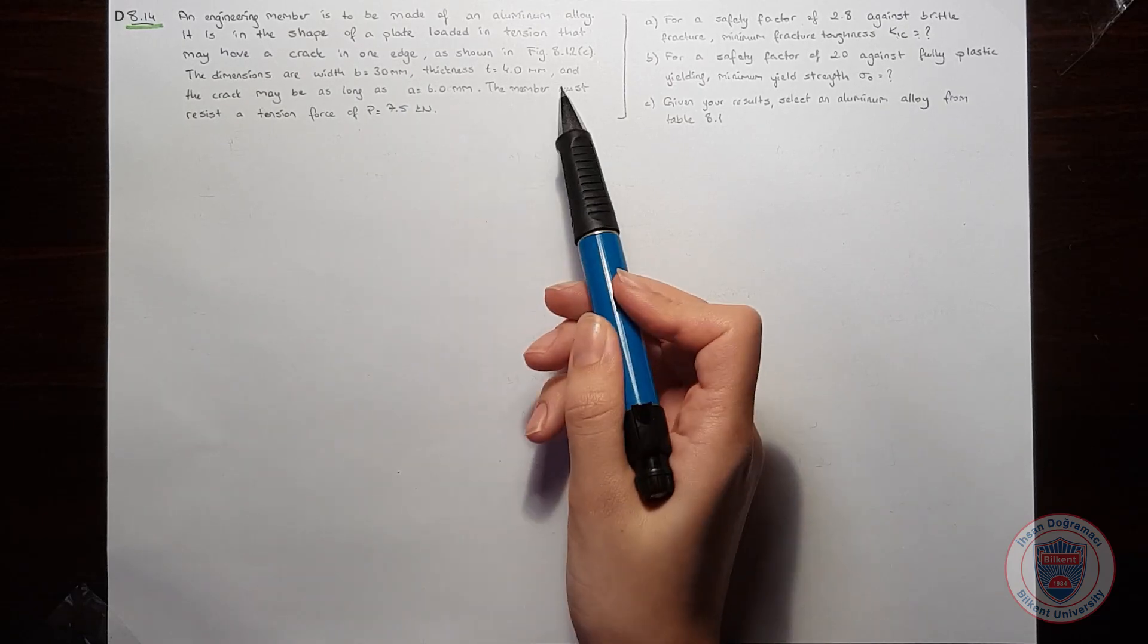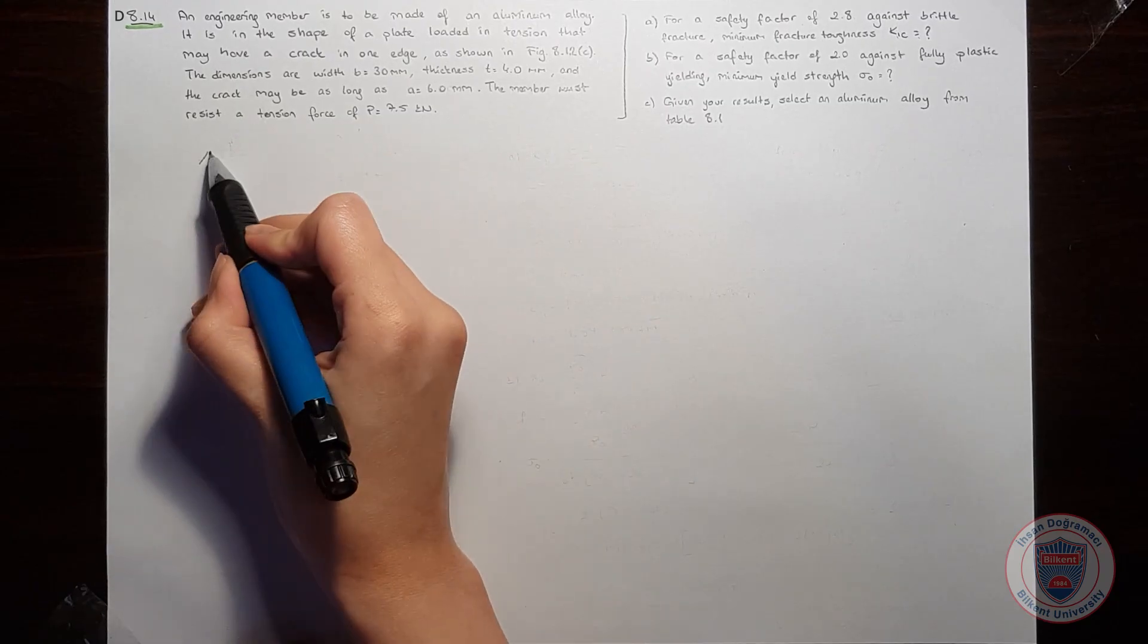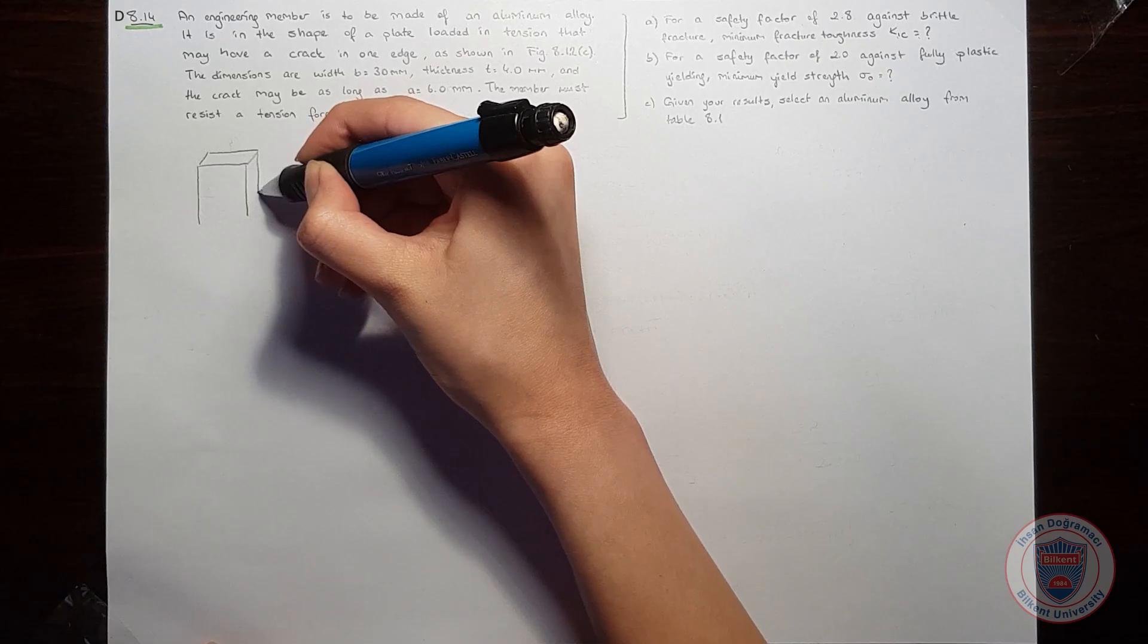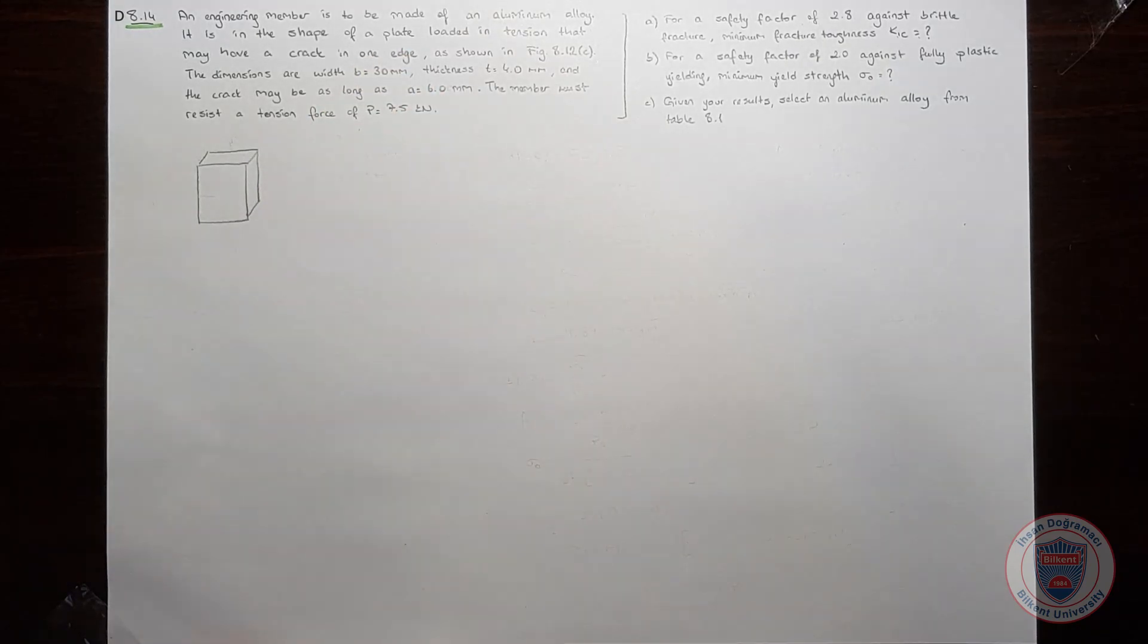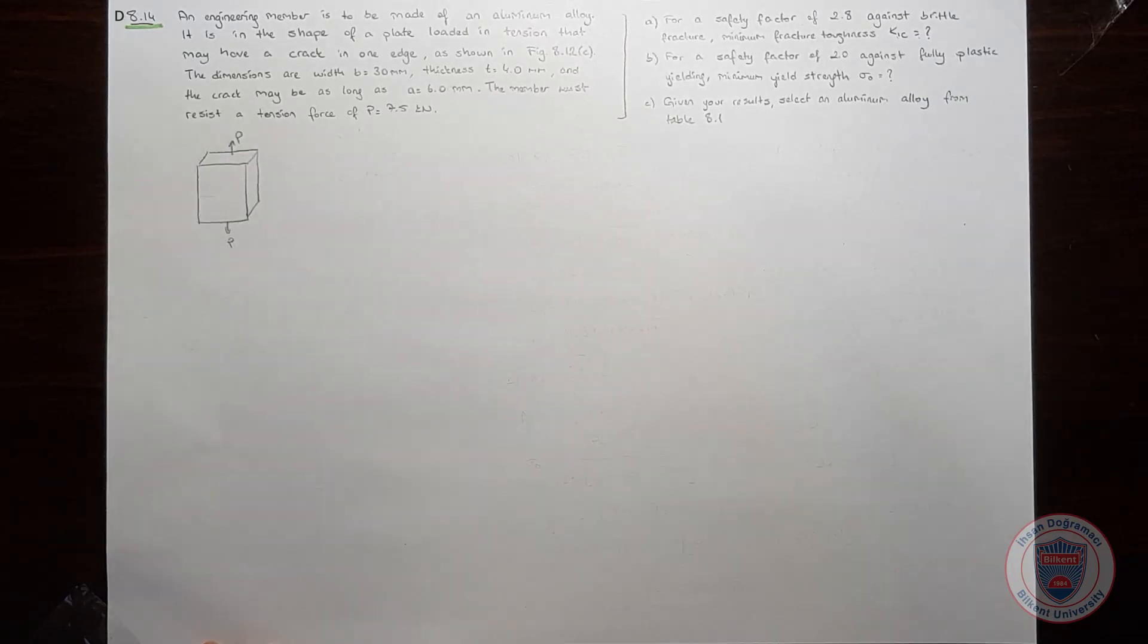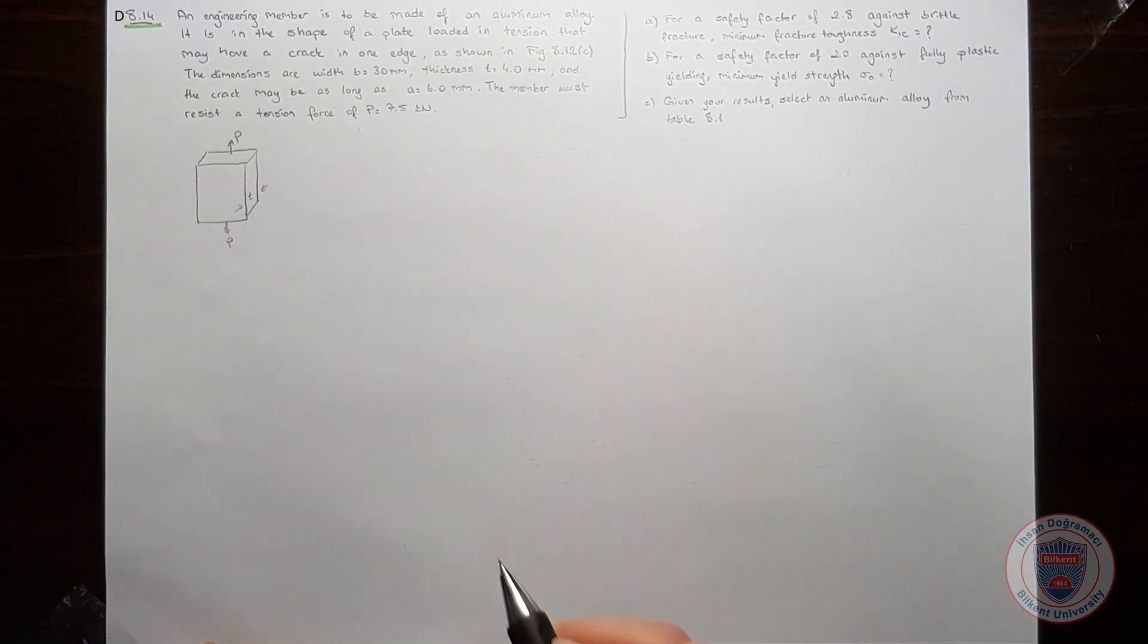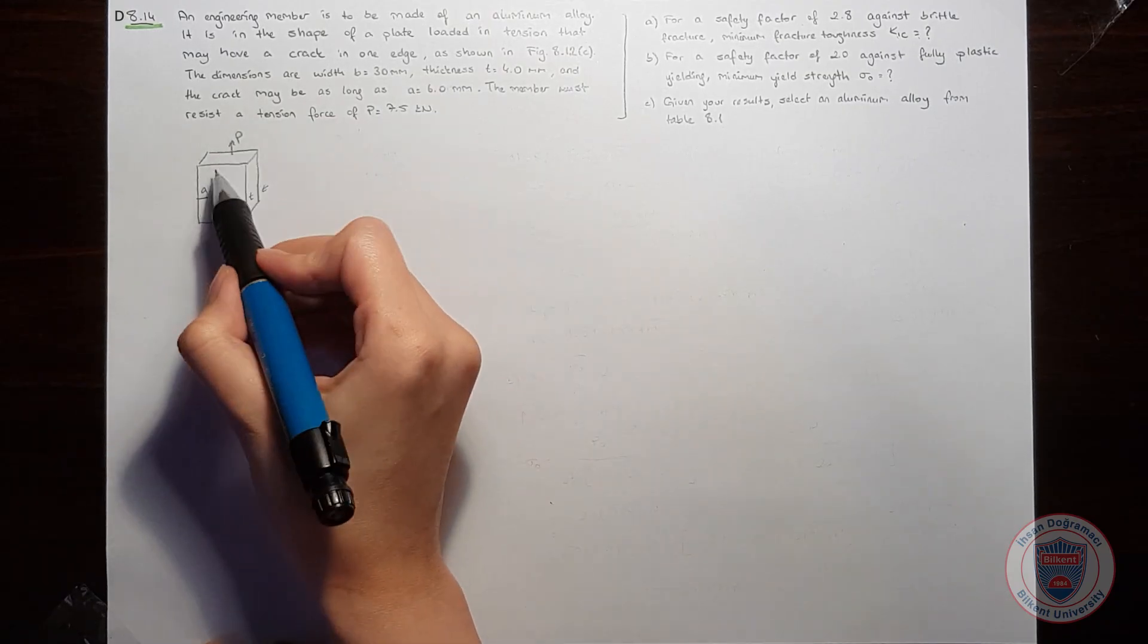Let's draw the shape to understand the question more easily. We know that the shape will look like this. We are given the dimensions. We know that we will have a tension force which is P, a thickness T, a crack size A, and the width which is B.